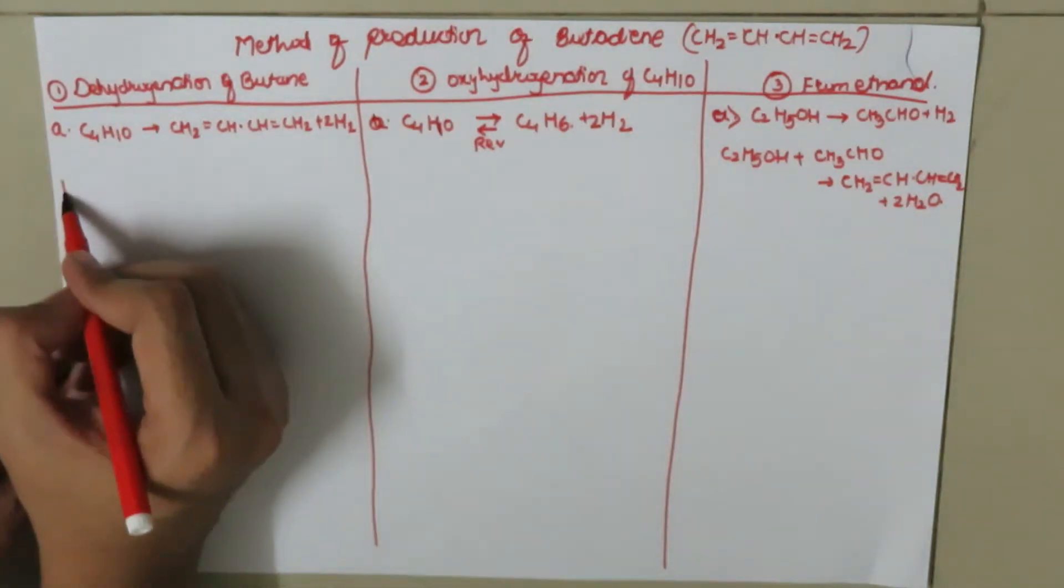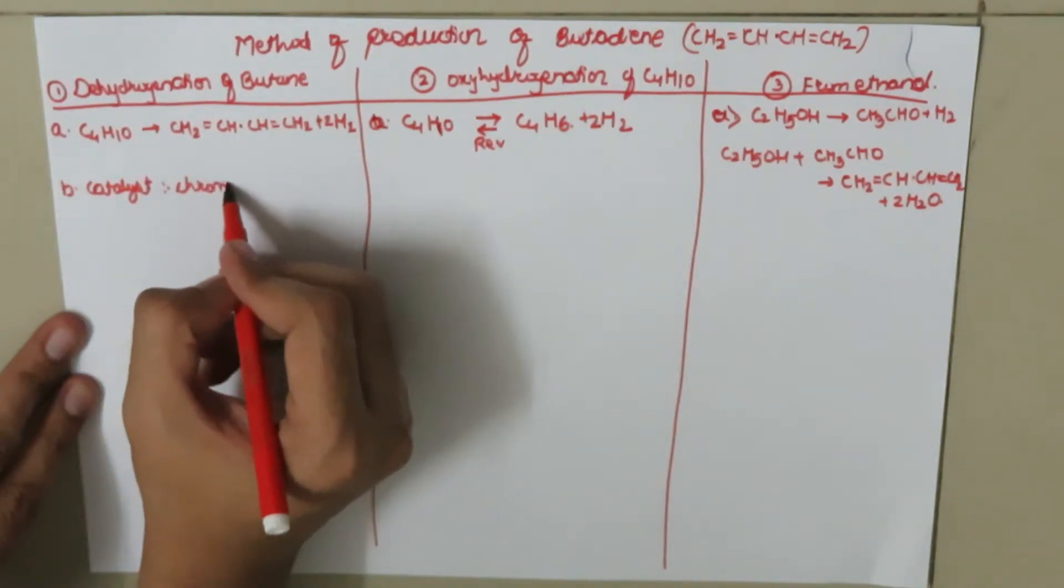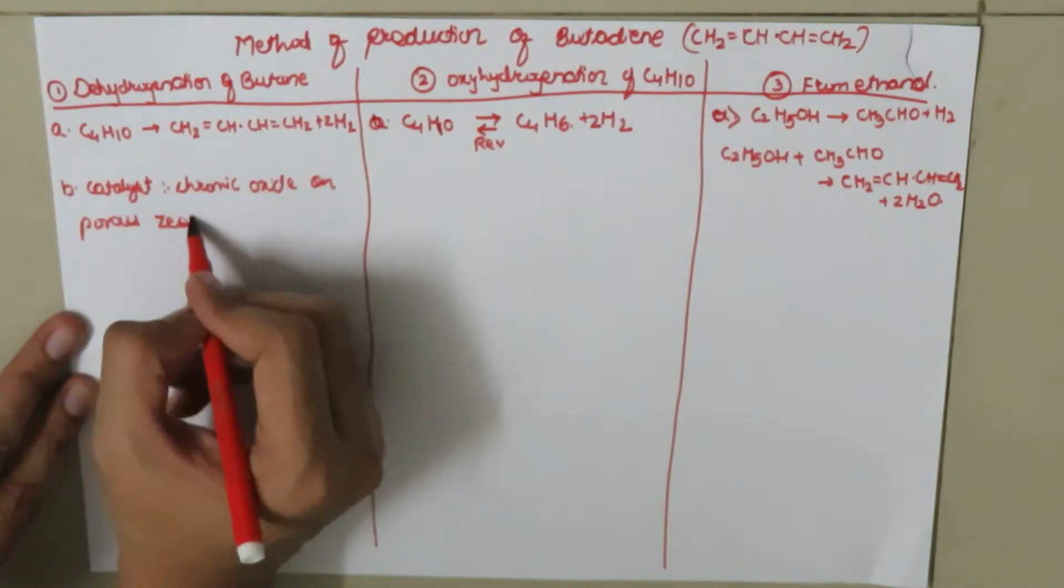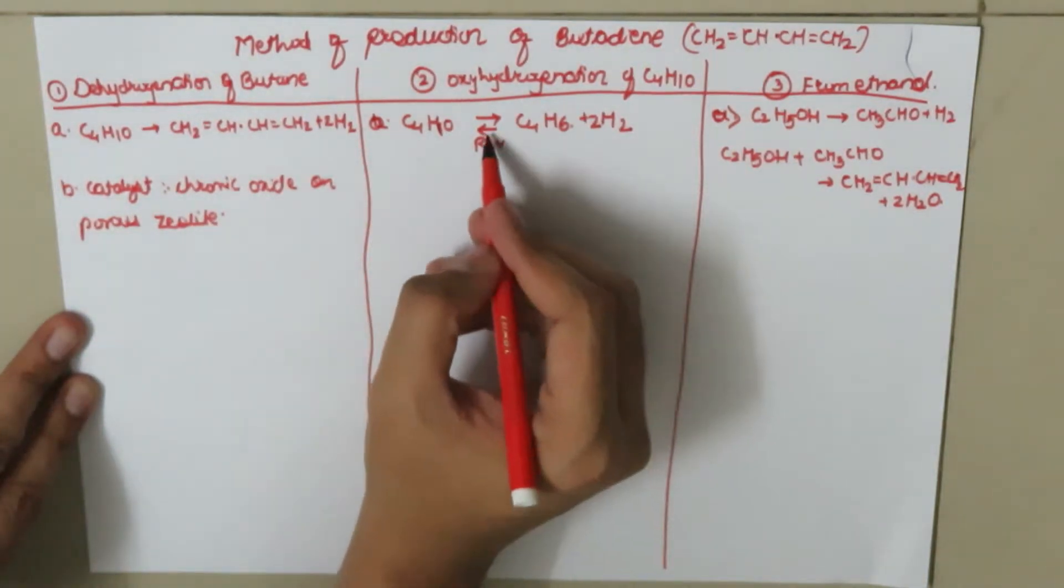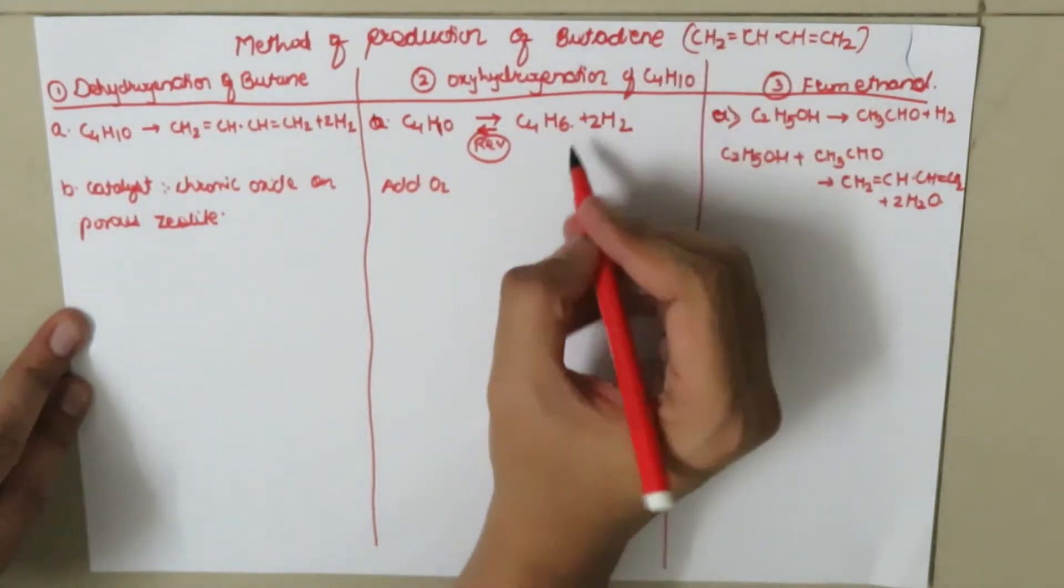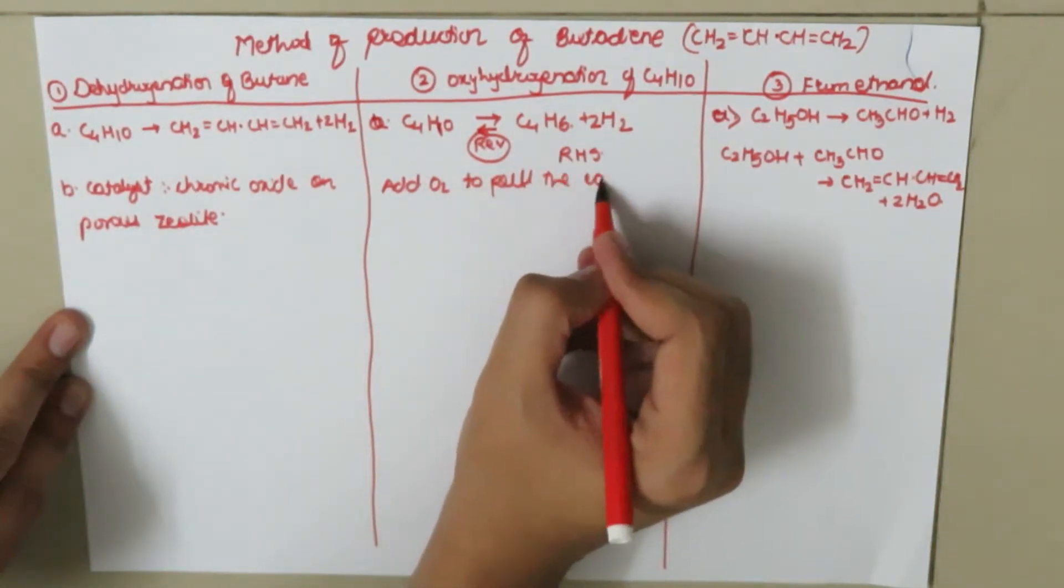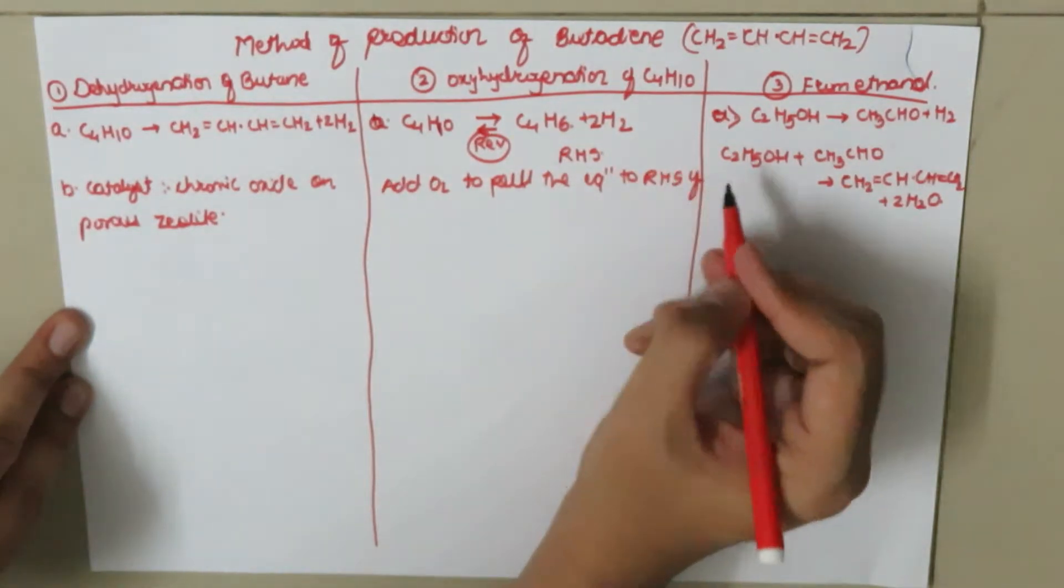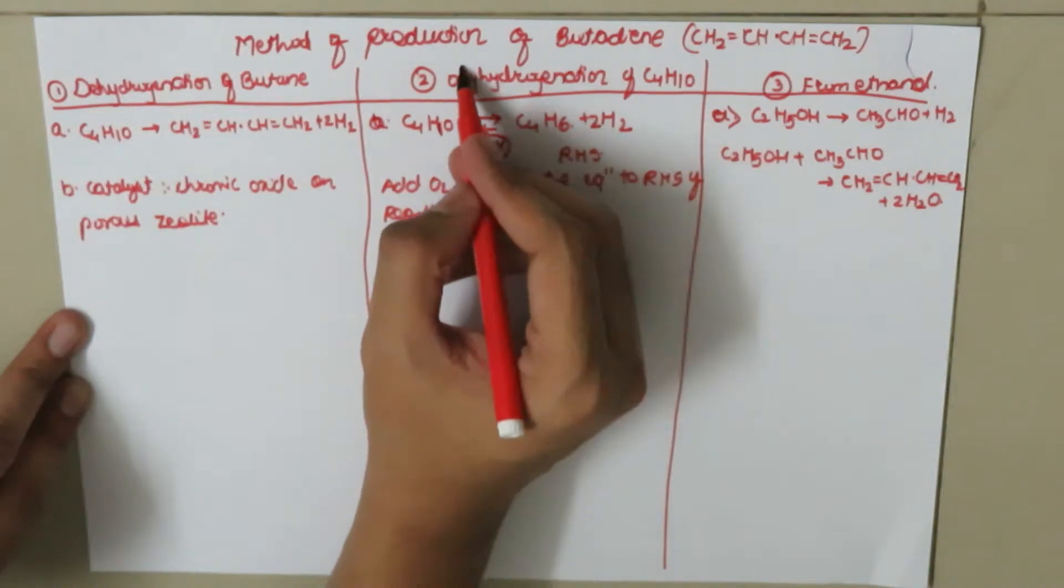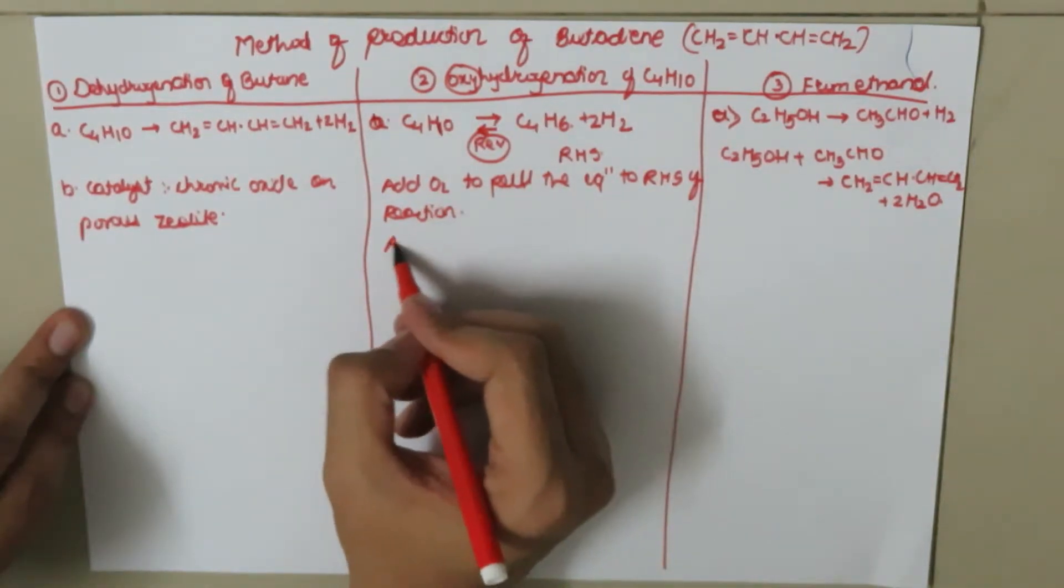Now we are going to find the second difference, that is the catalyst used. In this process, chromic oxide on porous zeolite is used. It's important to note that this is a reversible reaction, so we need to add oxygen to pull the equilibrium to the right-hand side of this reaction.